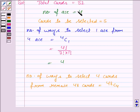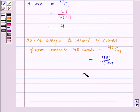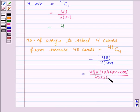48C4 is equal to 48 factorial upon 4 factorial into 44 factorial. Now, 48 factorial can be written as 48 into 47 into 46 into 45 into 44 factorial upon 4 factorial, which can be written as 4 into 3 into 2 into 1 into 44 factorial.